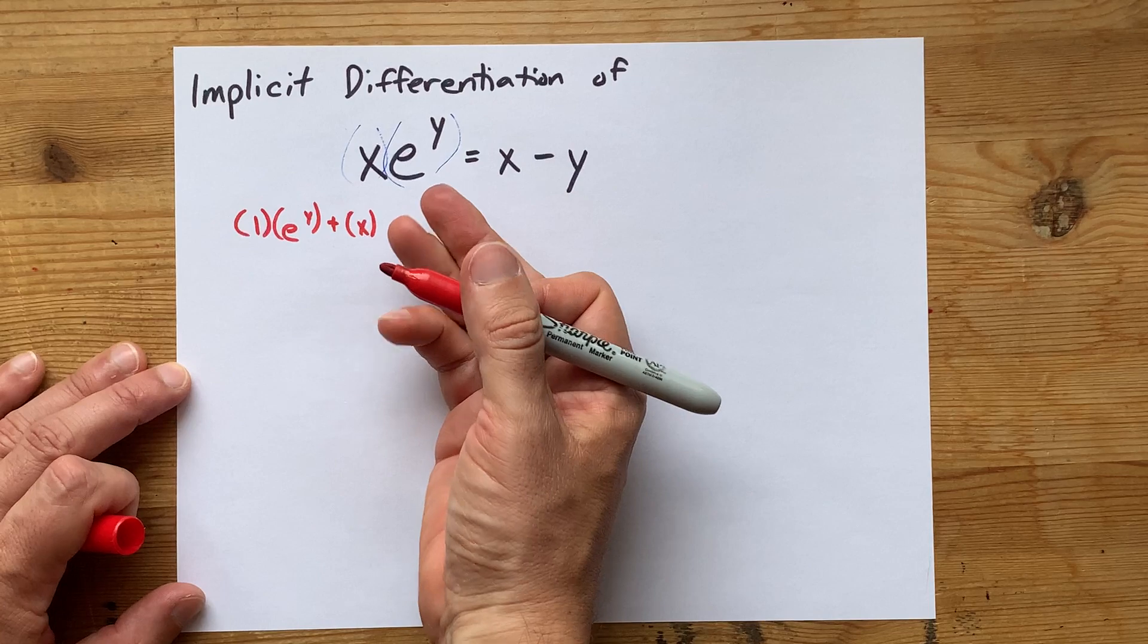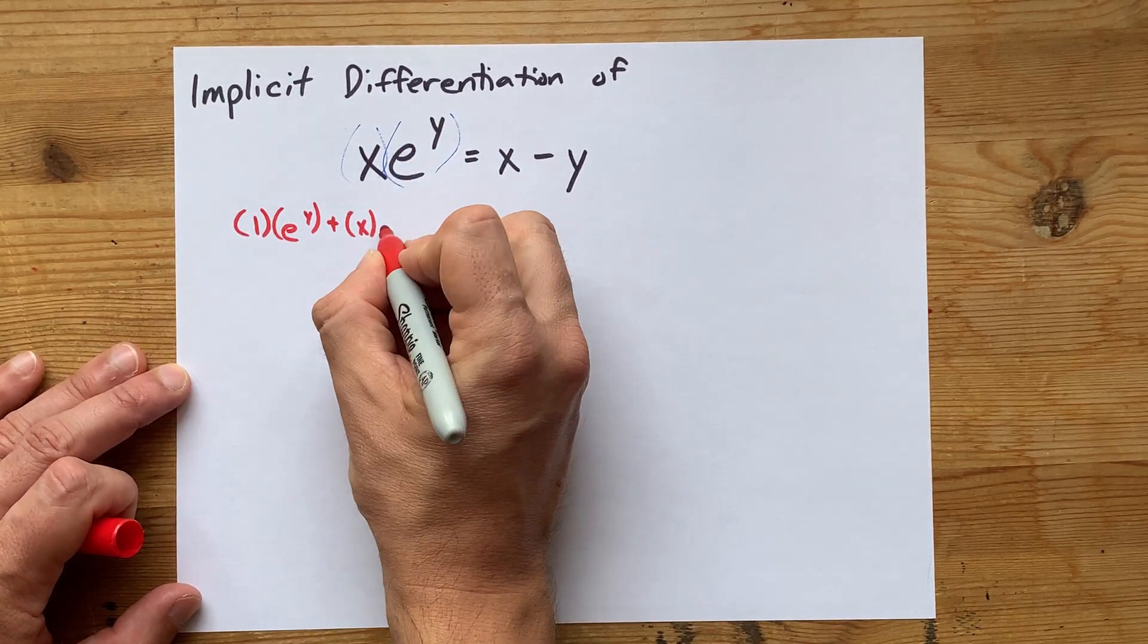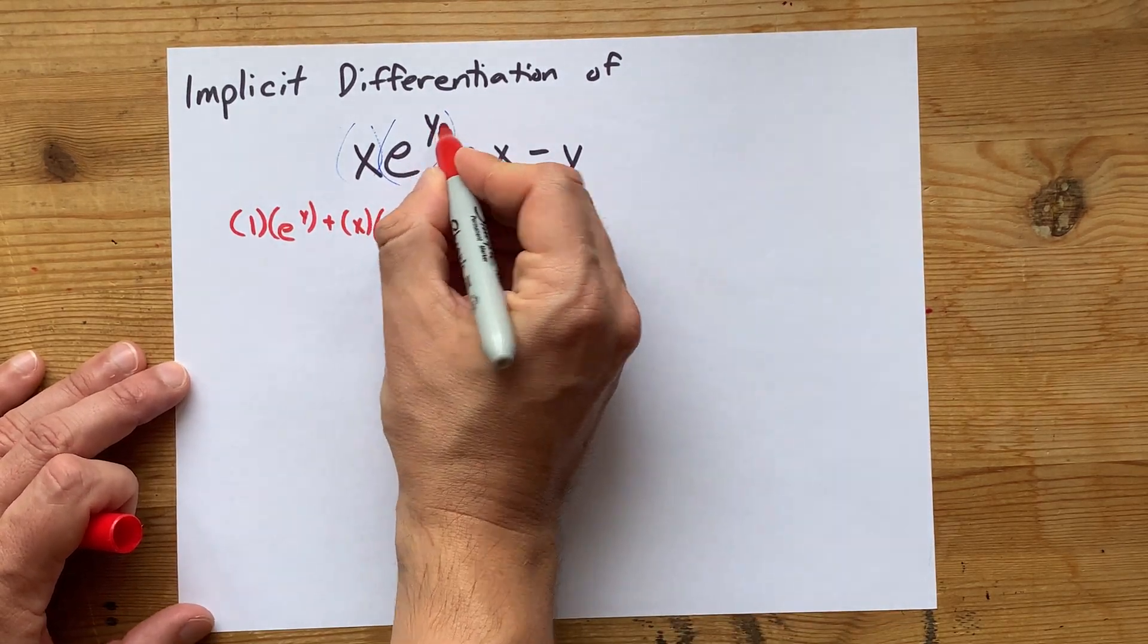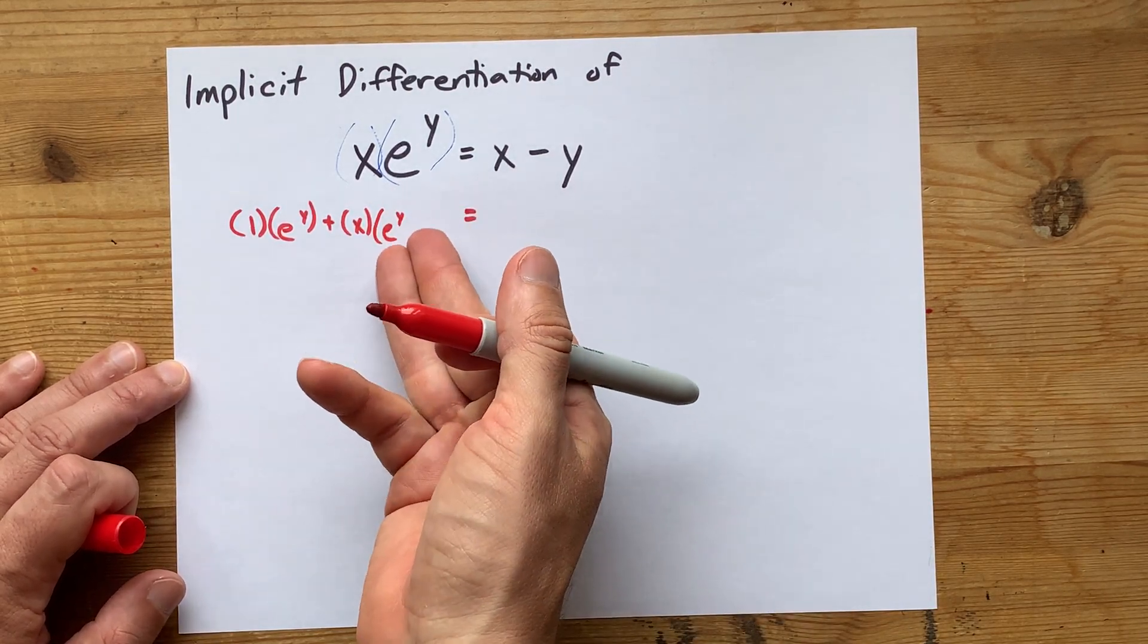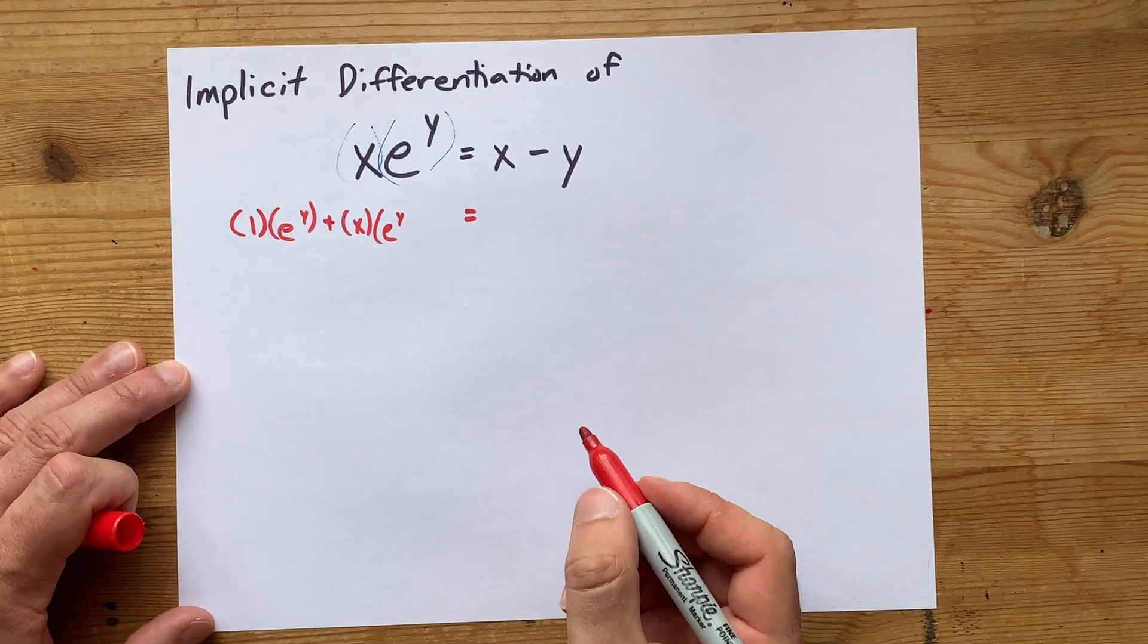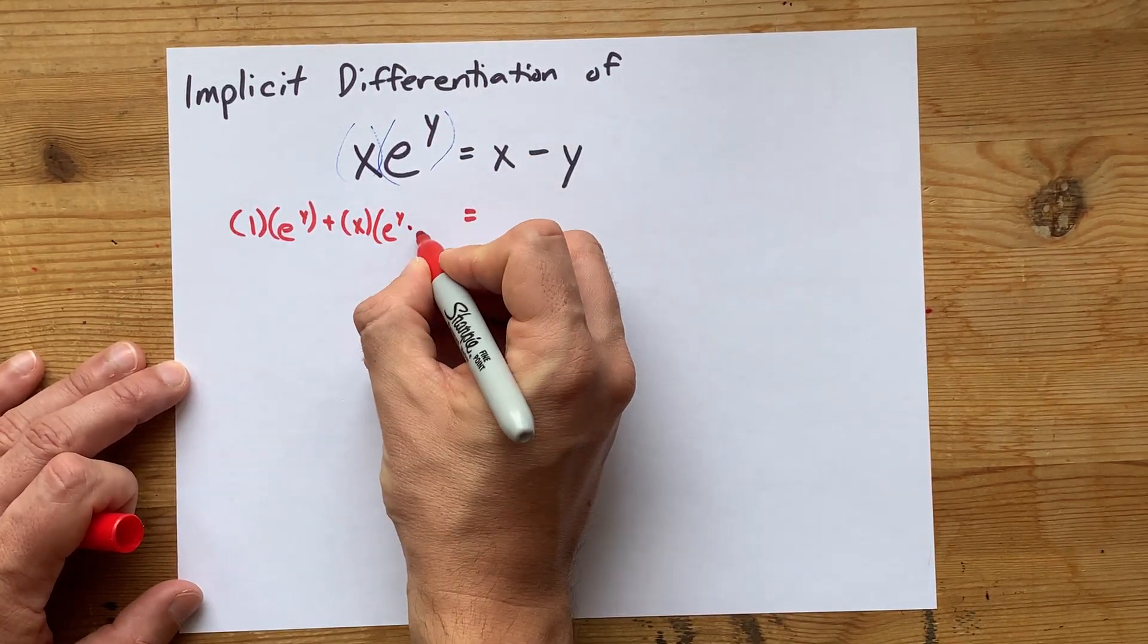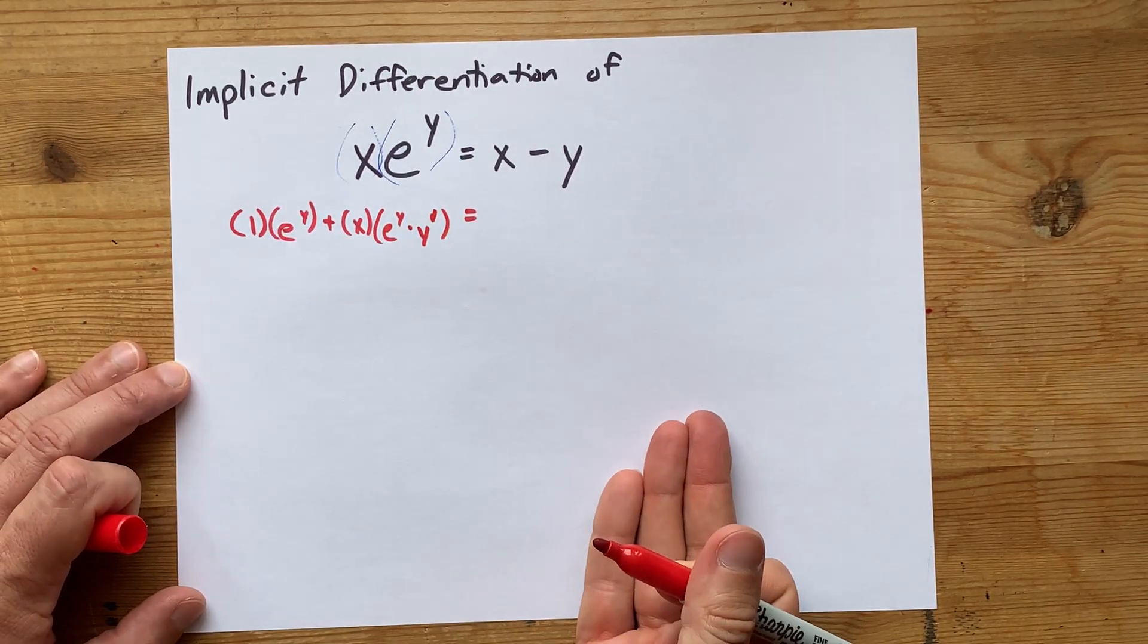Now, the derivative of e to the power of any function is that same thing, that's e to the y again, but if the thing in the exponent isn't just x, then there is an extra term that's multiplied here, that's what chain rule is all about. The derivative of that exponent, y, is y prime. That's the implicit differentiation part of this.